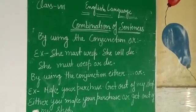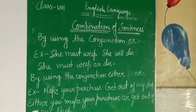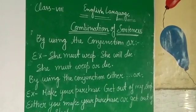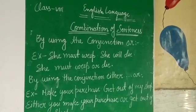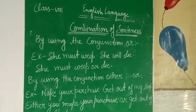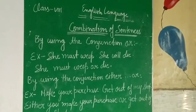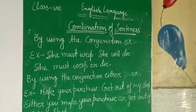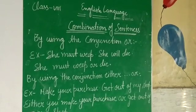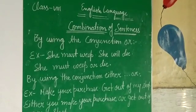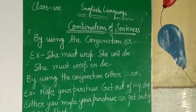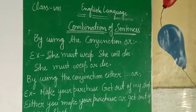Good morning children. Again the same topic in this video: combination of sentences. You know two or more simple sentences can be joined to form one single sentence by using conjunctions. In my last video, I explained using the conjunction 'or': she must weep, she will die — she must weep or die.